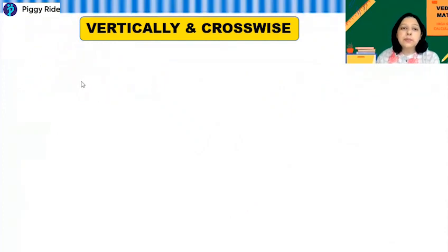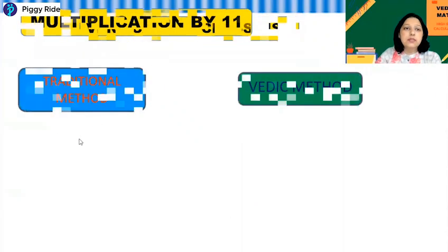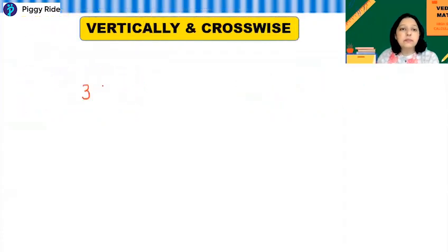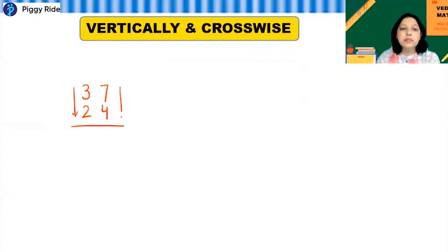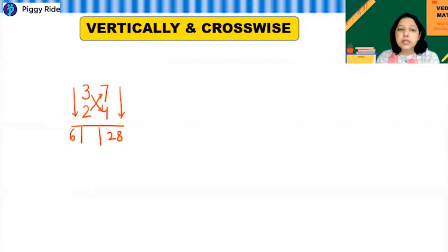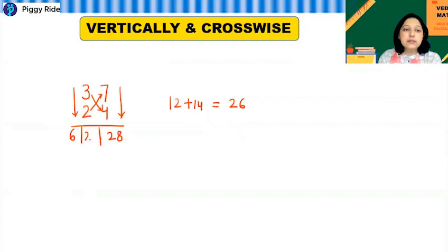Let's take another example: 37 times 24. Same process — vertical arrows downwards, then a cross in the middle, and divide the answer into three parts. First: 7 times 4 is 28. Last: 3 times 2 is 6. For the middle cross: 3 times 4 is 12, and 7 times 2 is 14, so the middle value is 26.